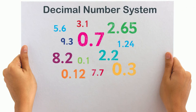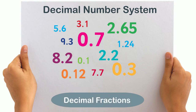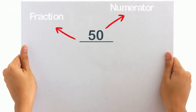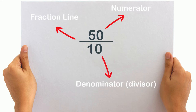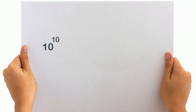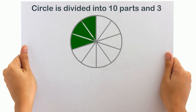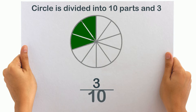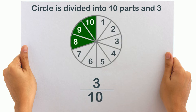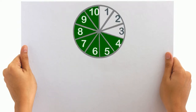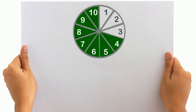The numbers that the decimal number system presents are called decimal fractions. A decimal fraction refers to a fraction whose denominator is either 10 or a power of 10, such as hundred, thousand, ten thousand, and so on. For instance, this circle is divided into 10 parts and three of these are colored, so it will be three by ten. Ten is the total number of sections and three is the number colored. If seven out of these parts are colored, we write it as seven by ten.